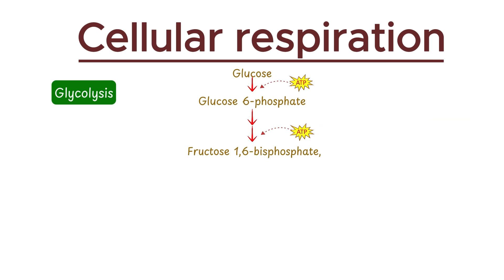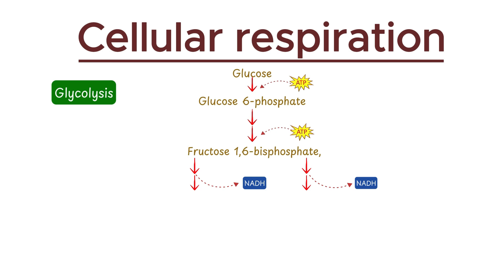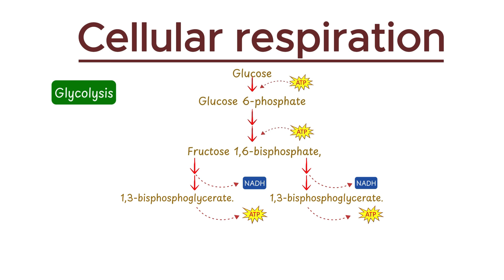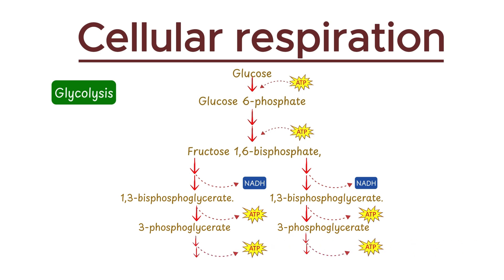Then, this six-carbon compound splits into two three-carbon molecules known as glyceraldehyde-3-phosphate. During subsequent reactions, two NADH molecules are produced when each molecule of glyceraldehyde-3-phosphate is oxidized to 1,3-bisphosphoglycerate. Moving forward, in the seventh step, two ATP molecules are produced when 1,3-bisphosphoglycerate is converted into 3-phosphoglycerate. Finally, in the last step, two more ATP molecules are produced when phosphoenolpyruvate is converted into pyruvate.